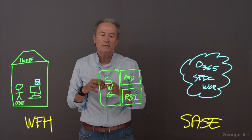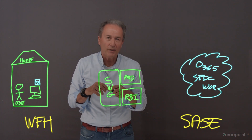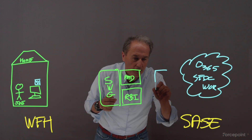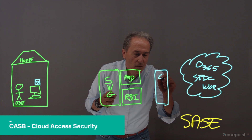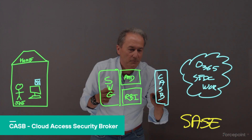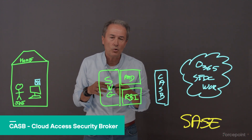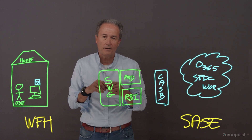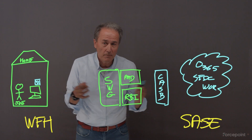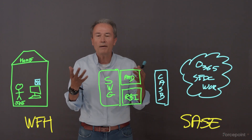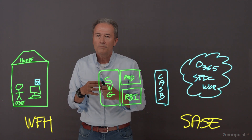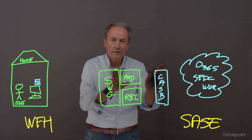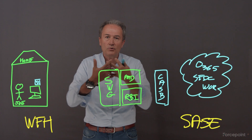That secure connectivity is the job for CASB — the Cloud Access Security Broker. We want to give IT some control of that cloud traffic. For example, my friends in Europe love WeTransfer, a consumer application to exchange files. But this is not an enterprise-grade application. So we want the secure web gateway and the CASB to work together — that integration is so precious.